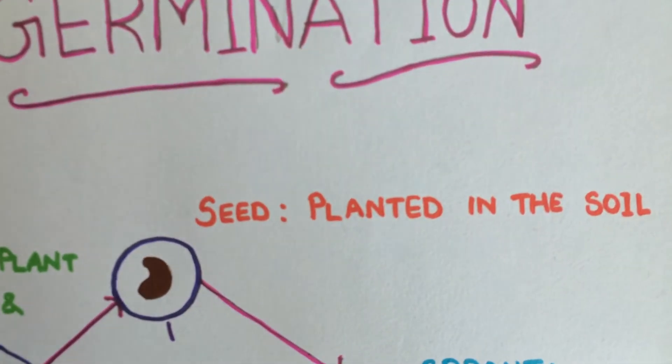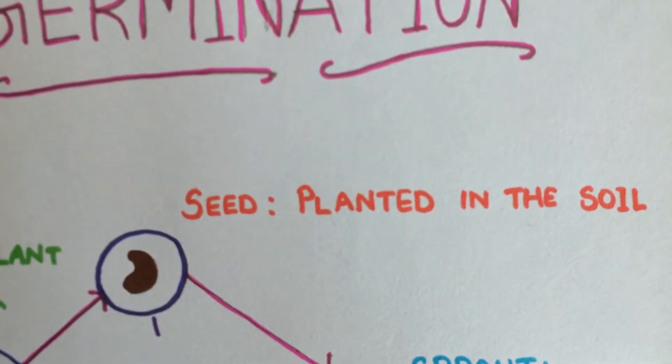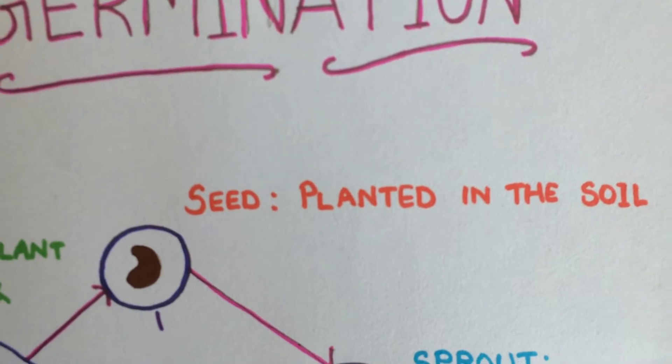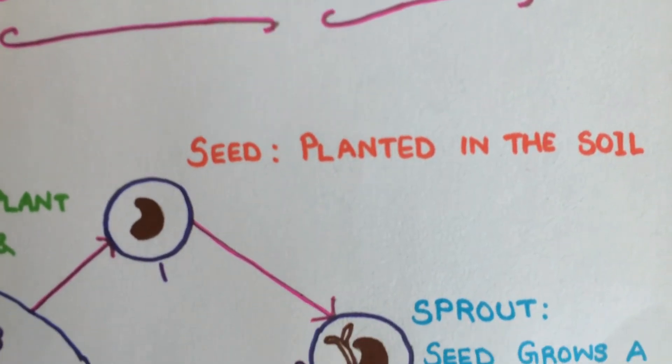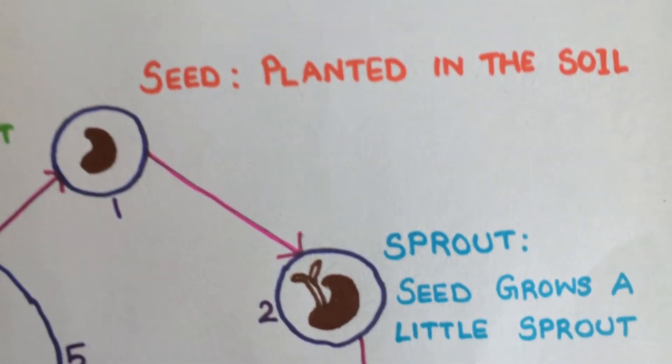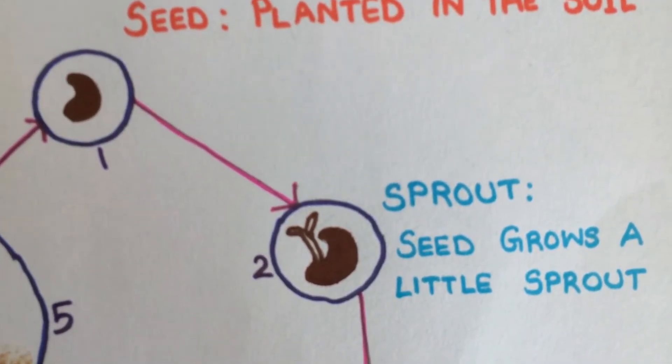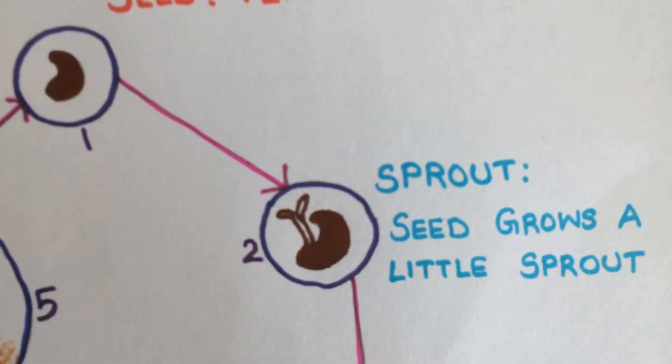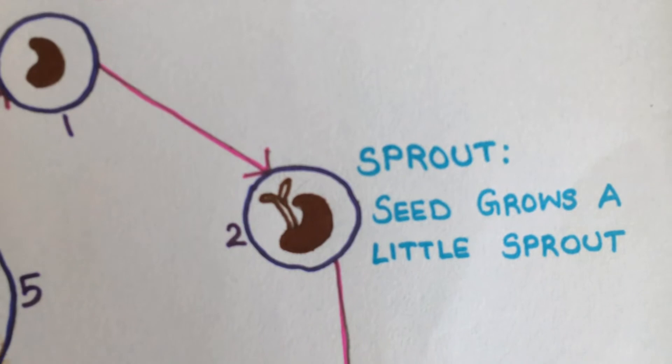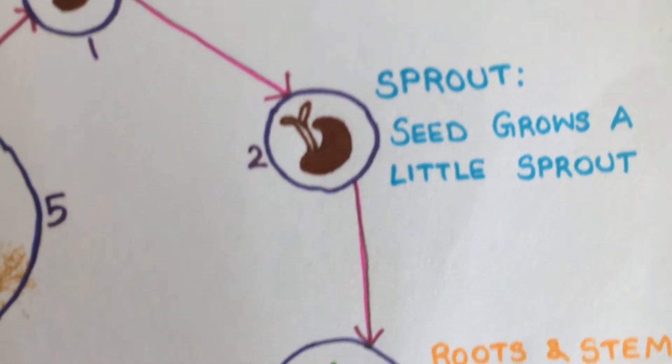A seed planted in the soil sprouts. The seed grows a little sprout with roots and a stump.